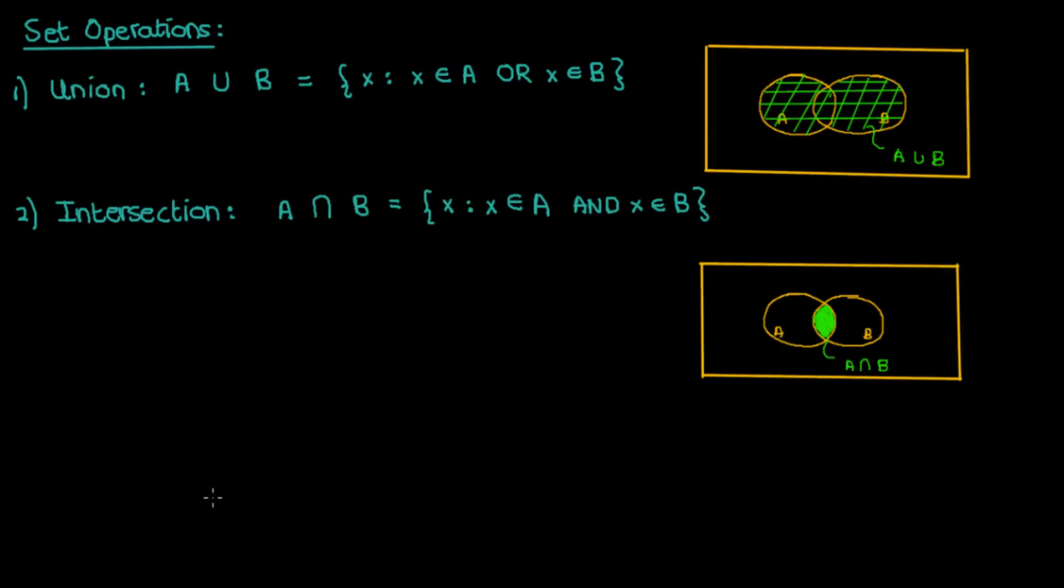However, if set A and B happen to have no common elements, so if the Venn diagram looks something like this where A and B were completely separate, then A intersection B would be an empty set, which is basically a set that contains nothing. The empty set, by the way, is denoted by the Greek letter phi. Now when A intersection B is empty, then the sets A and B are said to be disjoint.